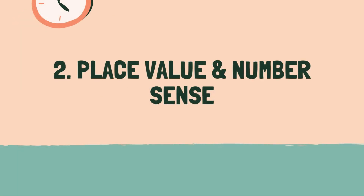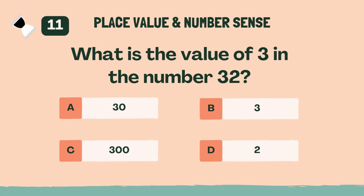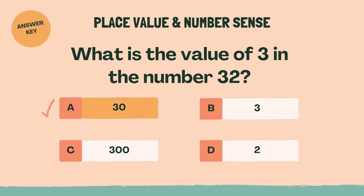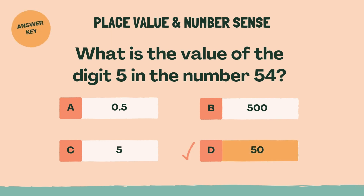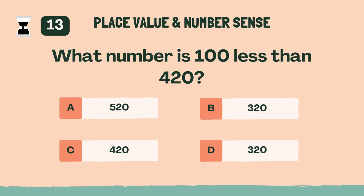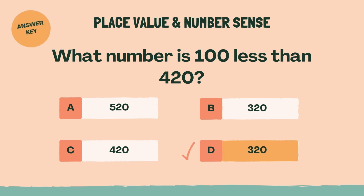Category 2: place value and number sense. Three, two, one, go. What is the value of 3 in the number 32? A, 30. What is the value of the digit 5 in the number 54? D, 50. What number is 100 less than 420? D, 320.